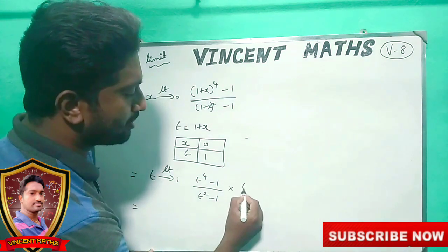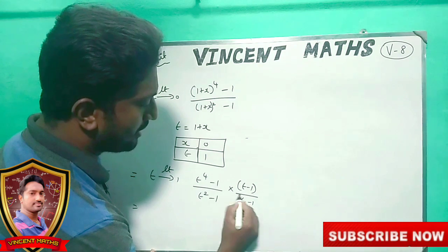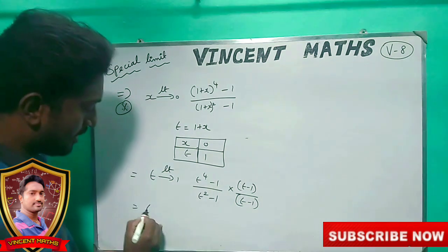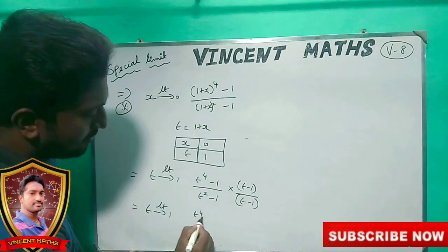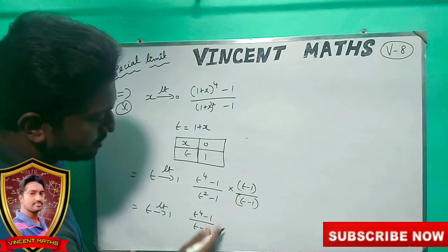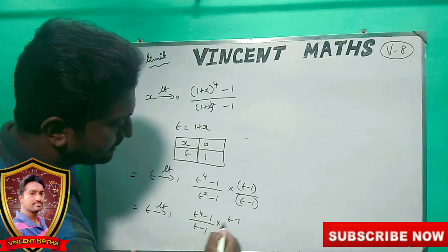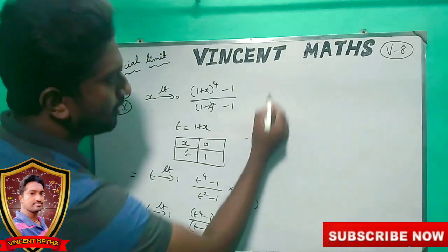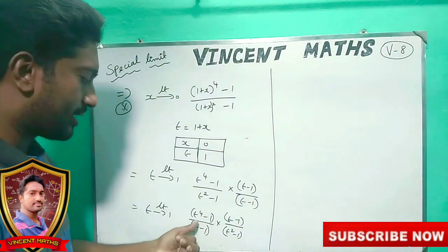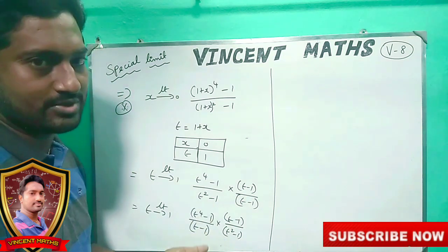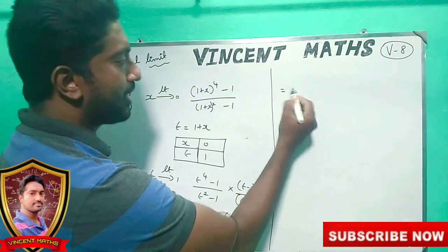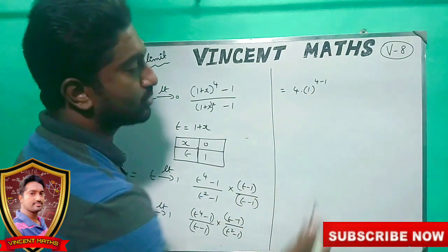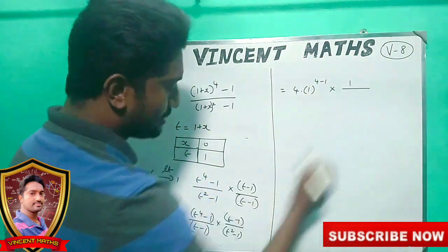What do we want to do? Multiple of t minus 1 divided by t minus 1. We want to do multiple — that is the form. Now, limit t goes to 1: t power 4, t minus 1. This value is t minus 1 divided by t squared minus 1. We want to substitute the formula. If n value is 4 and a value is 1, then we want to do 4 minus 1. That is the formula — the reciprocal formula.